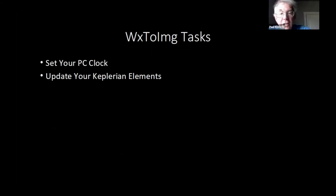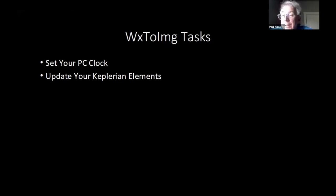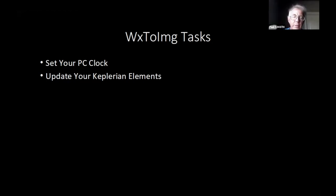Once you have Weather to Image, there are two things to set up. First, set your PC clock — I would sync it every week, since PCs don't maintain time accurately; being a quarter of a second off will cause boundary drawing issues. Second, update the Keplerian elements — or TLEs (Two-Line Elements) — named after Johannes Kepler. These describe all aspects of a satellite so you can predict where it will be in the future. Update them every couple of weeks because satellites do adjust their positions slightly.